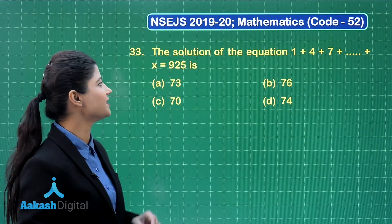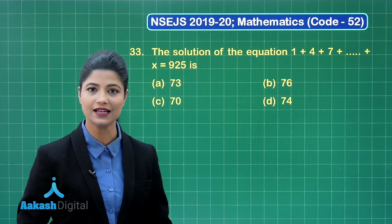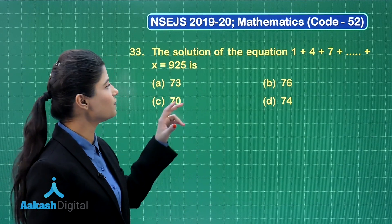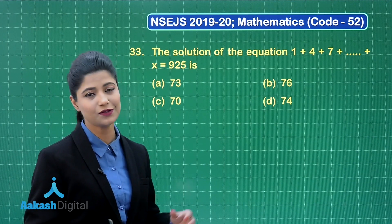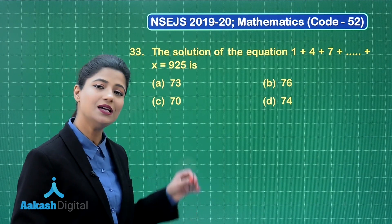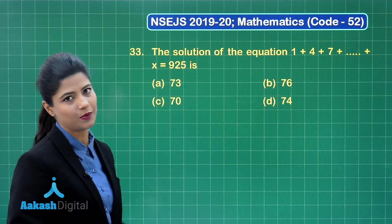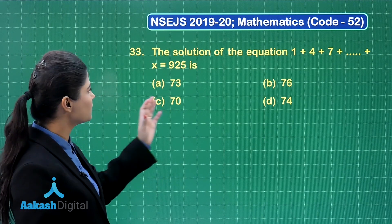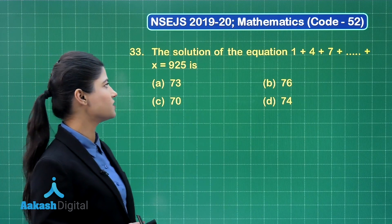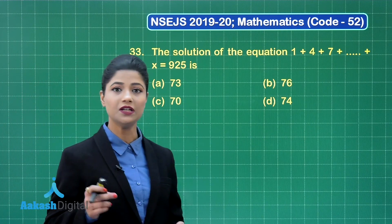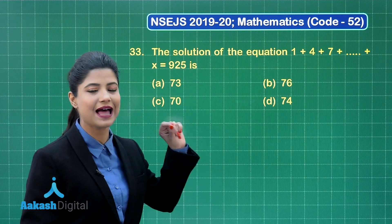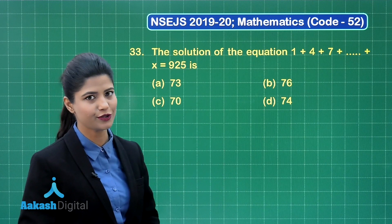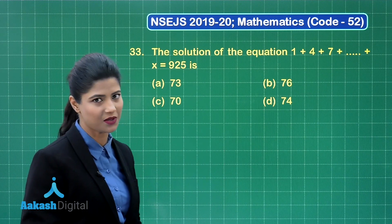Let us take up question number 33. It states that the solution of the equation 1 plus 4 plus 7, and so on until x, is equal to 925. Out of these four options, you need to obtain the value of x, which will be the solution for this given equation.